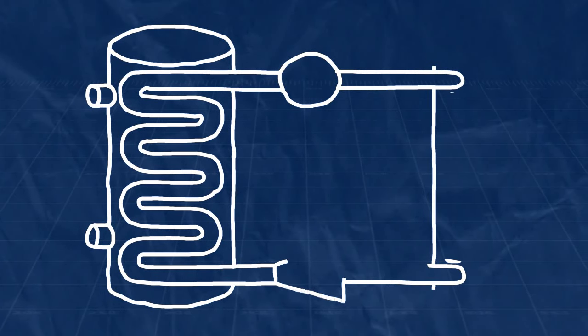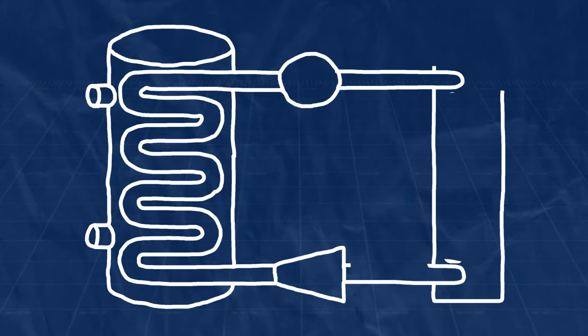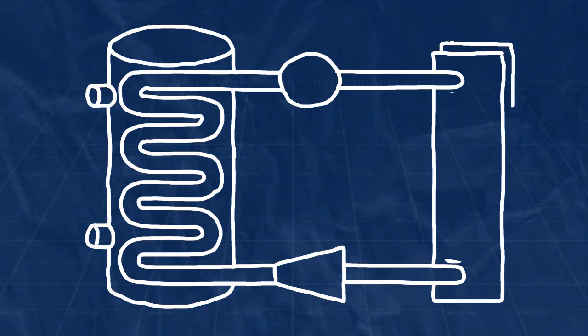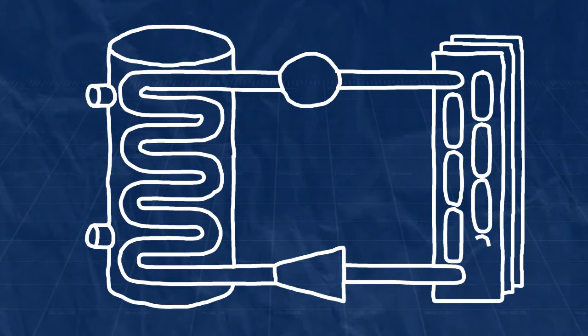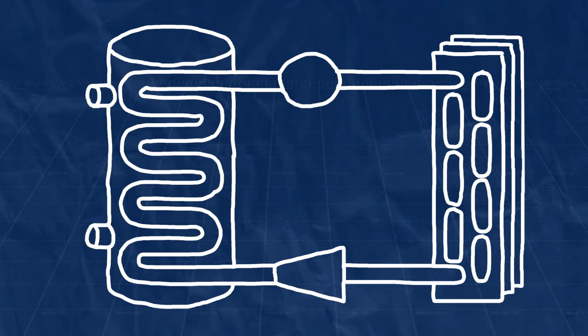As it cycles through the system, the refrigerant undergoes variations in temperature and pressure, as well as alternating between liquid and vaporous states. Let's examine the four stages in one complete cycle.